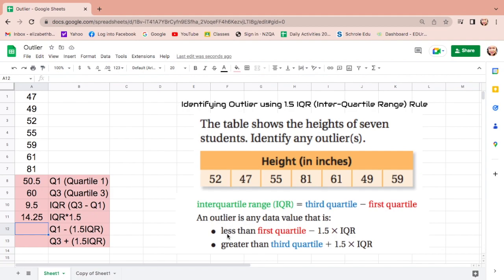Here, the outliers are numbers less than first quartile, or quartile 1, which is 50.5, and greater than third quartile, which is 60. To find that...